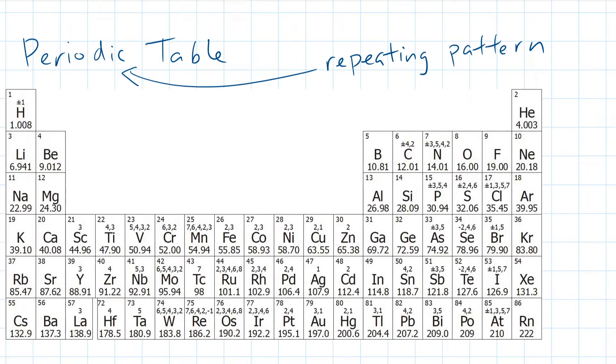So the periodic table has many patterns hidden inside its funny looking shape. One secret is that all elements in the first group, or column, contain one valence electron. So hydrogen, lithium, sodium, and so forth have one valence electron. The next element to the right will therefore have two valence electrons, so helium will have two valence electrons. You might also notice that there are two elements listed in the first period, or row.